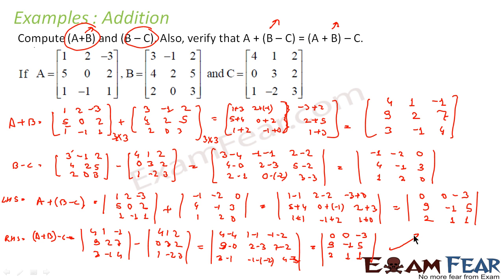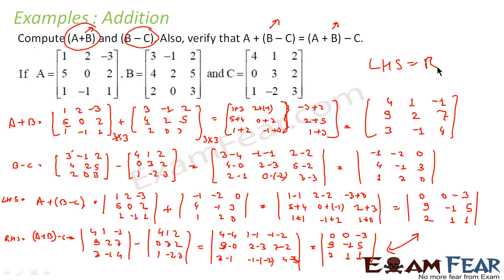Comparing LHS and RHS: both are 3 by 3 matrices and all corresponding elements are the same — 0, 0, -3, 9, -1, 5, 2, 1, 1. Therefore LHS equals RHS, and the property is verified.